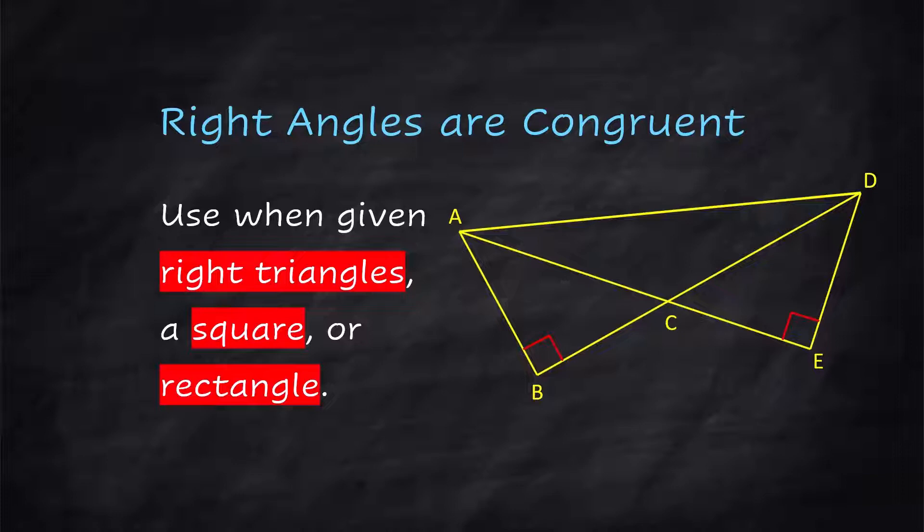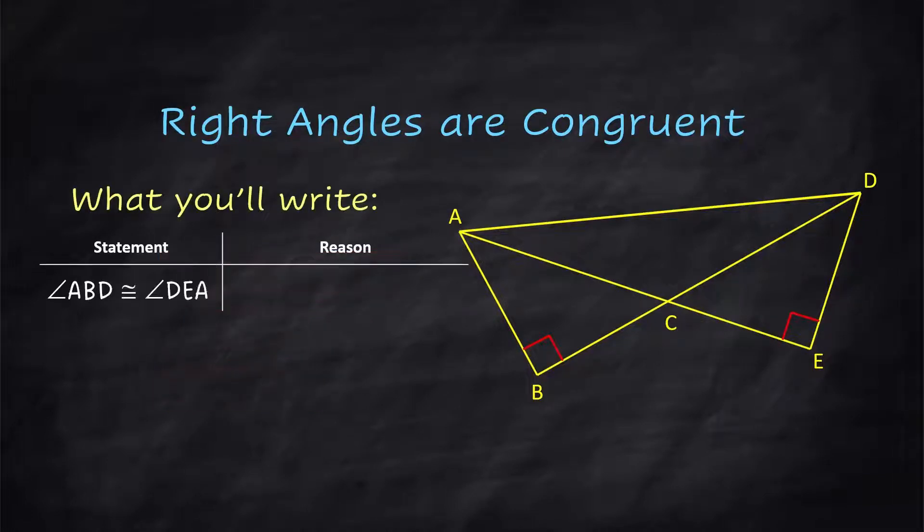In a proof, just go ahead and make the statement that angle ABD is congruent to angle DEA because right angles are congruent.